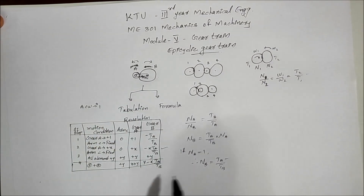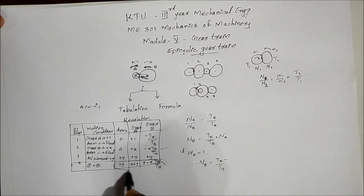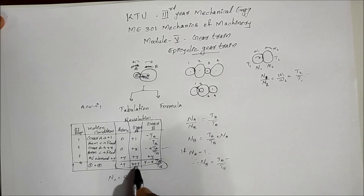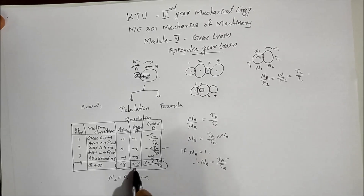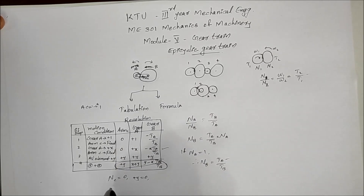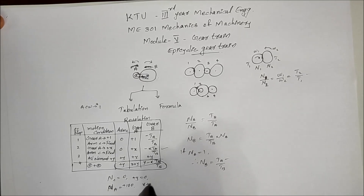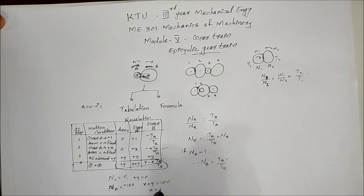Now applying this to a question: Arm C is fixed, and the speed of Gear A is plus 100 rpm. Since Arm C is fixed, Y equals zero. From the condition, X plus Y equals 100, and with Y equal to zero, the value of X equals 100.